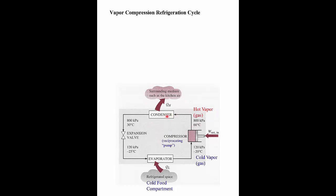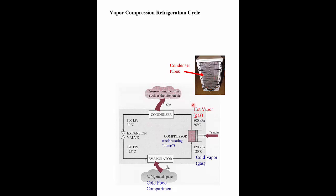The hot gas flows to the condenser. You've seen the condenser — if you have an older refrigerator, it's those tubes on the back of the refrigerator. They're hot, about 50 to 60 degrees, and they dissipate the heat to the kitchen. That's where the heat is lost to the kitchen. So the condenser is like a heat exchanger that cools down this hot vapor, and on the other side you end up with warm liquid at about 30 degrees.